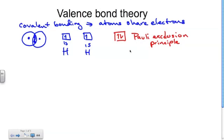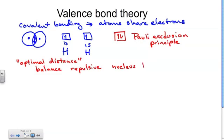So one of the things about where this bond forms, or the optimal distance between two nuclei, happens when there's a balance between the repulsive forces of nuclei, nucleus to nucleus. Obviously, nuclei are positive, being filled with protons, so positive and positive will repel each other.